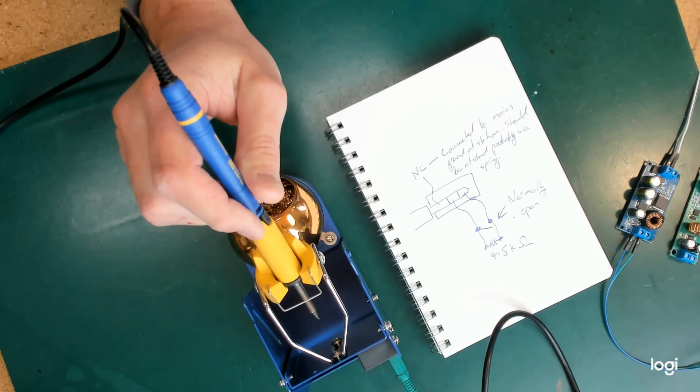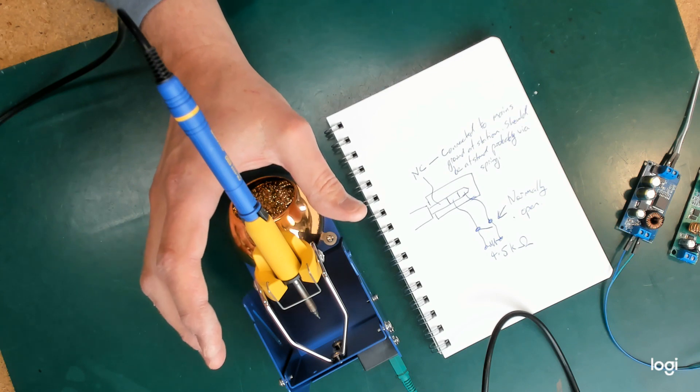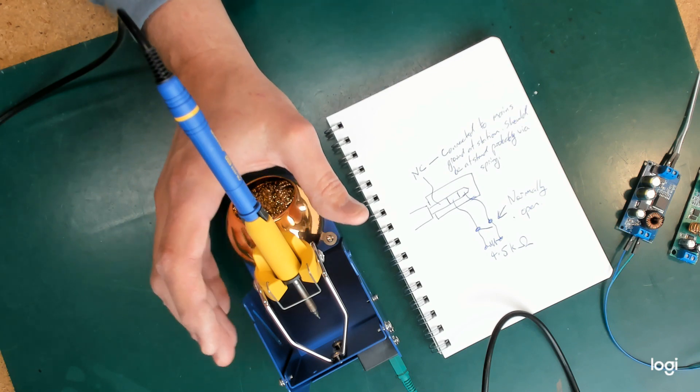This station with the switch in it will reduce the temperature of the iron after a preset amount of time. I can't set that amount of time on this station. I've only seen it do it once because I kept playing with it. I think it's about five minutes.